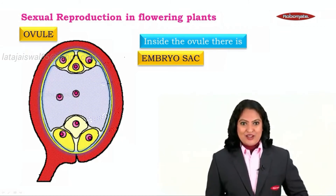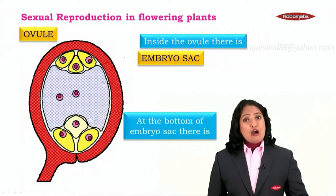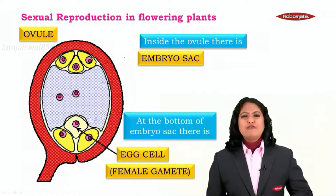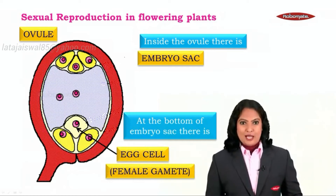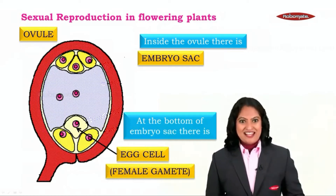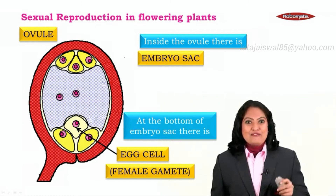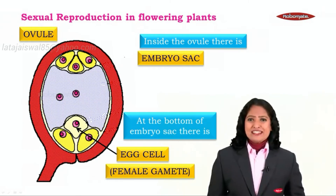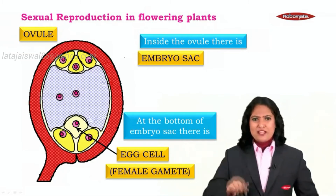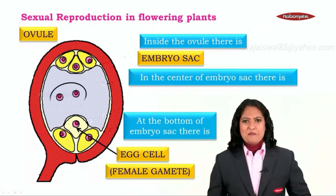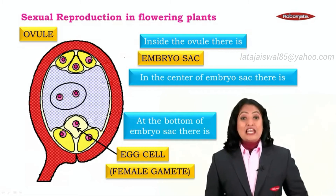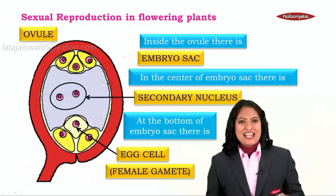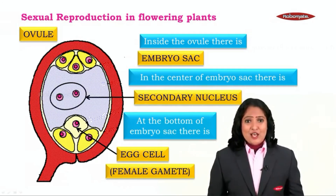What does this ovule have? The ovule has an embryo sac inside it — a pouch that is going to bear new life, and therefore it is called the embryo sac. Further, right at the bottom of the embryo sac there is a very special cell called the egg cell, which is none other than the female gamete. Along with the egg cell, right at the center, you can see two pink dot-like structures — these are called the secondary nucleus.